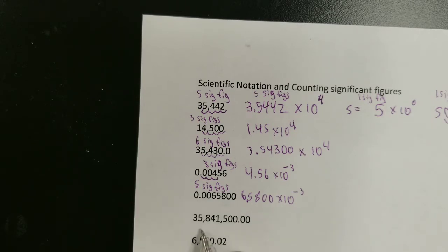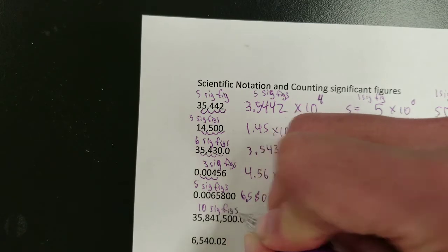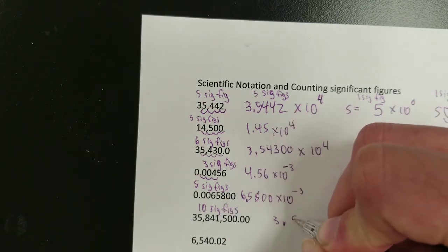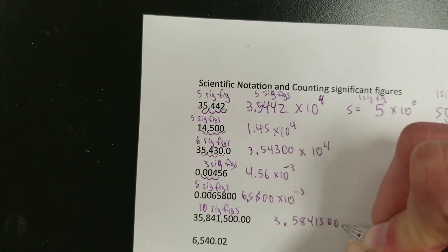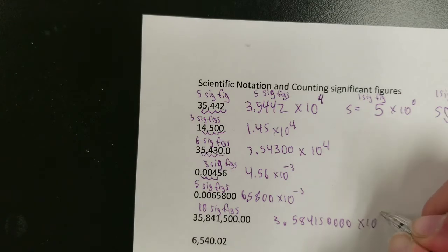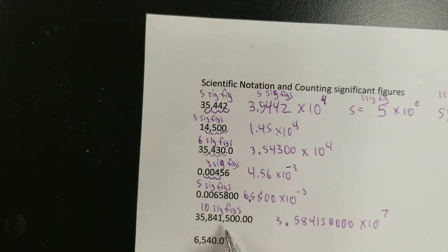Even for very large numbers, the same dynamic is true in the sense of counting the zeros at the end: 1, 2, 3, 4, 5, 6, 7, 8, 9, 10 sig figs. That means the scientific notation has 10 significant figures: 3.58415000. And how many times do you have to move the decimal to get that? 1, 2, 3, 4, 5, 6, 7 — times 10 to the 7th. Positive exponent because it's not a little decimal; it is a big number, much larger than 1.